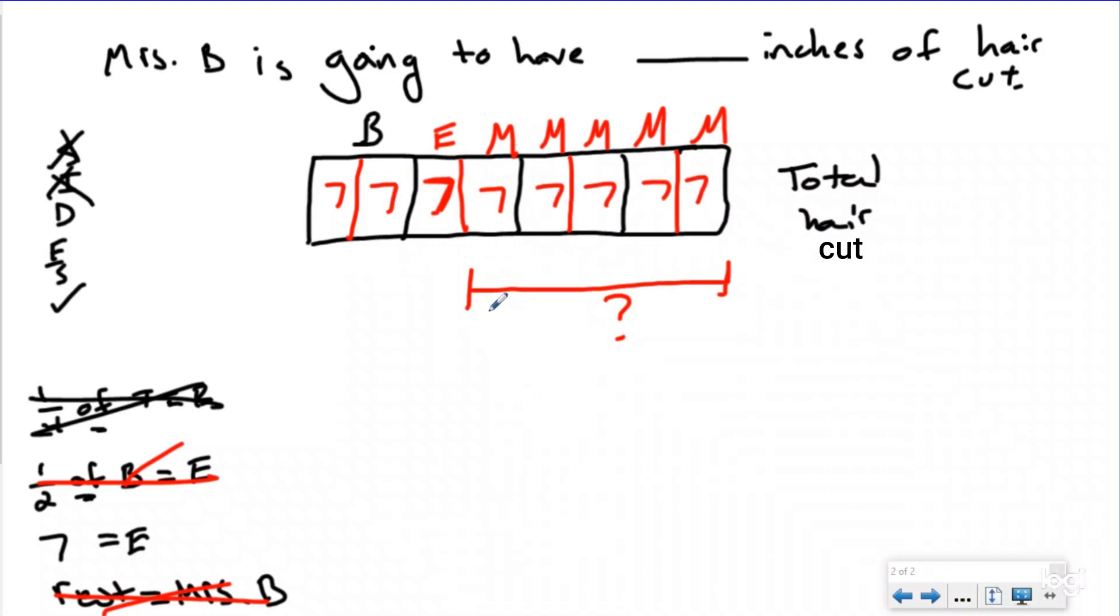I'm going to double check that it makes sense. If Mr. Butler had 14 and Elijah had half of what Mr. Butler had cut, half of 14 is 7, so that makes sense. Now my question is not how much total hair was cut. Some of you probably multiplied 7 times 8 and got 56 and said that was your answer because you didn't write a statement. I'm not looking for the total amount of hair.